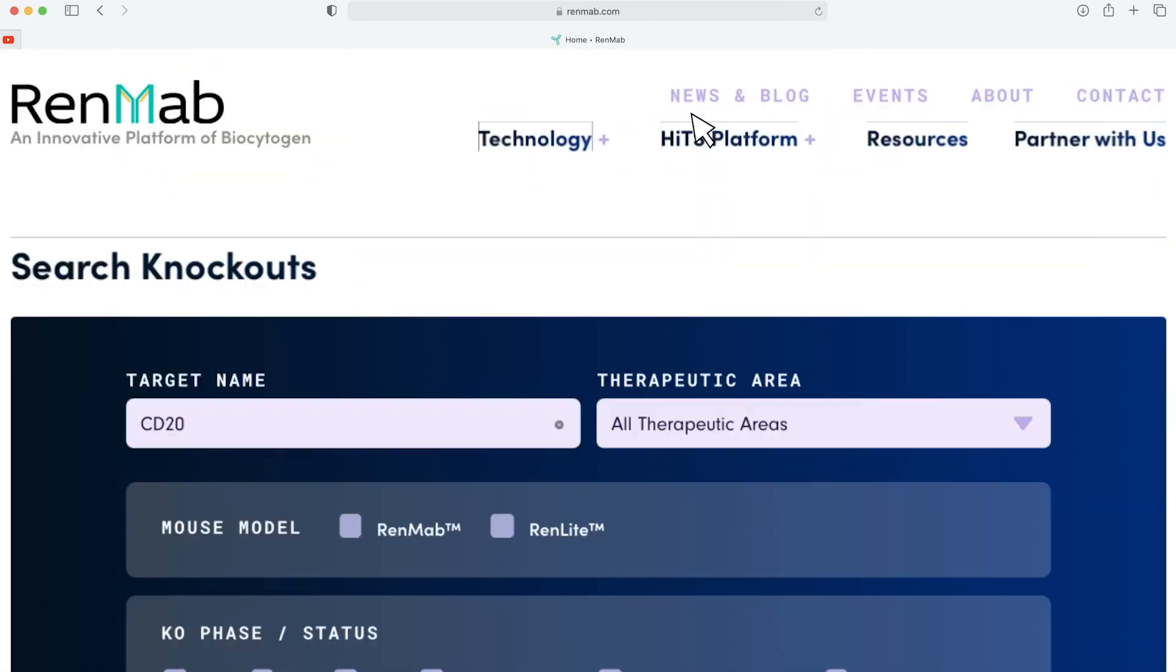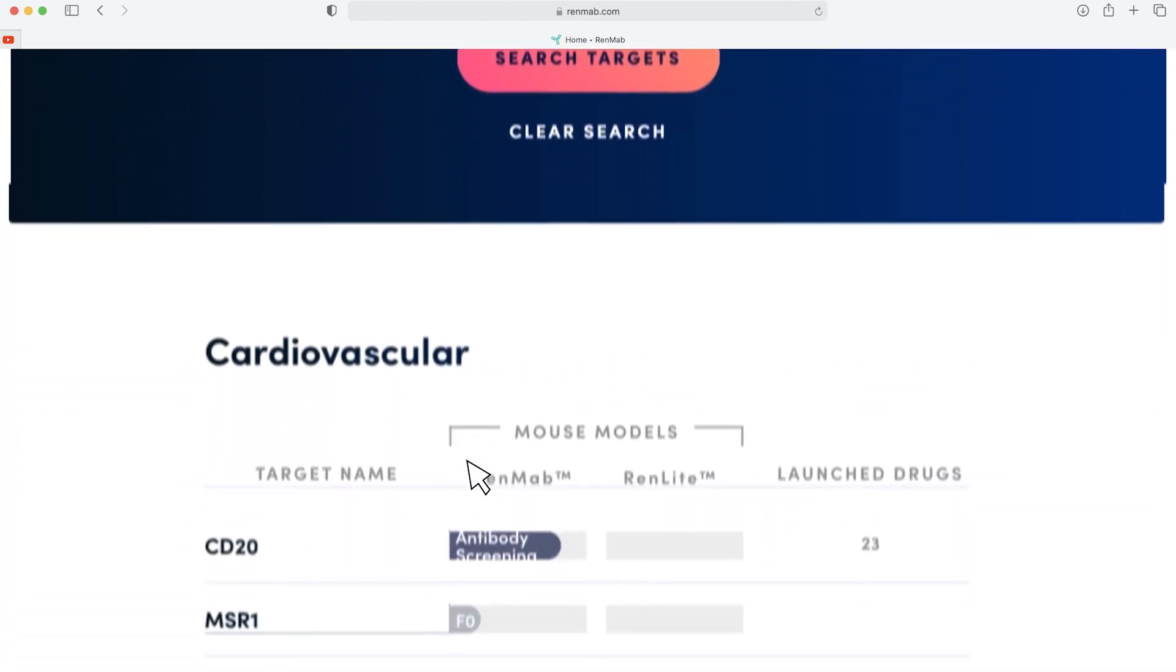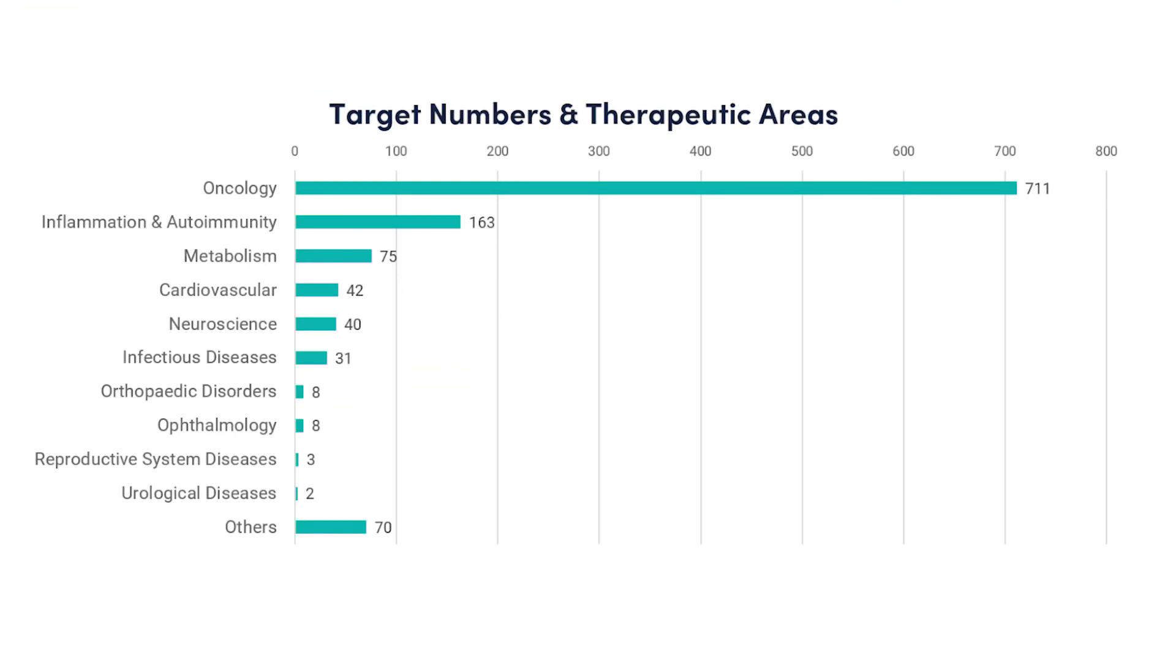Thus, the goal of the RenMice HITS platform is to generate antibodies with first-in-class and best-in-class potential for well-known and novel targets in immuno-oncology, oncology, and other therapeutic areas.